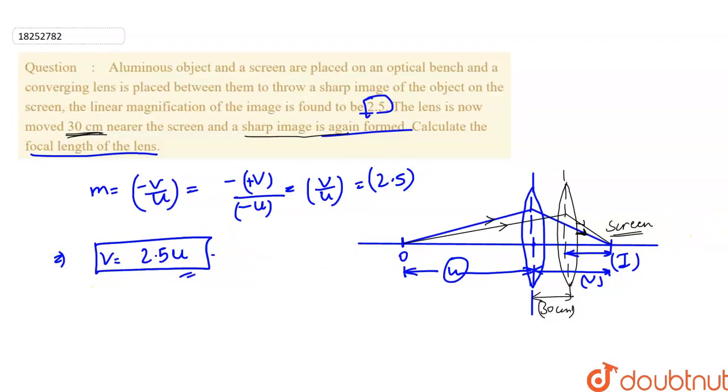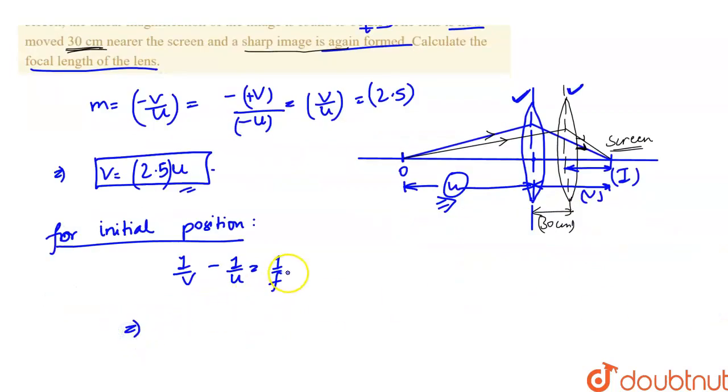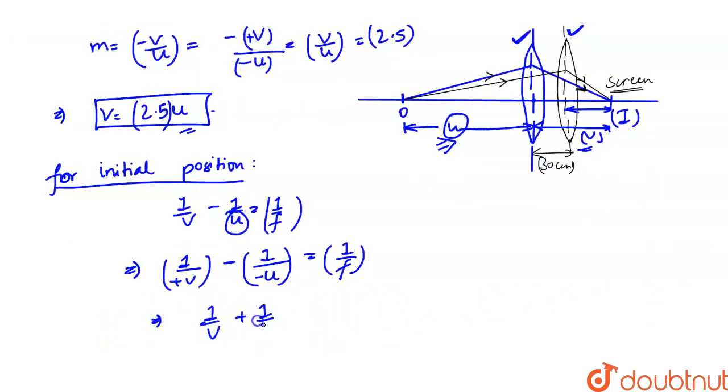This diagram is actually wrong because we have shown u more here, but u actually is less, because v is 2.5 times u. Now the lens is moved, so we have to use the lens formula for two times—one for the initial position and one for the new position. For initial position, 1 upon v minus 1 upon u equals 1 upon f. The image is at distance v on the right side, and object is at distance u on the left side, so it will be minus u, giving us 1 upon v plus 1 upon u equals 1 upon f.